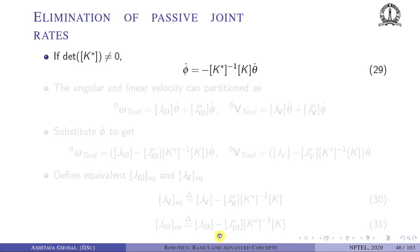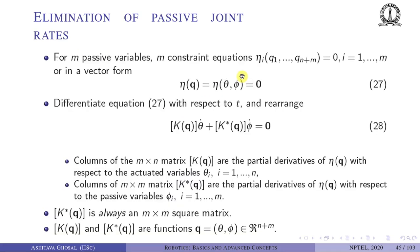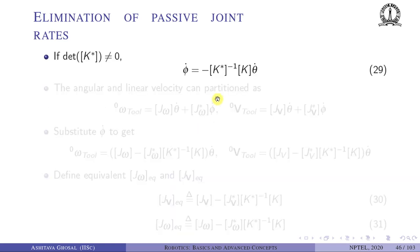If the determinant of K* is not equal to zero, we can solve for phi-dot: phi-dot = −K*⁻¹ K theta-dot. Since K* is a square matrix we can take its determinant, and as long as it is nonzero, we obtain phi-dot as a linear function of theta-dot.